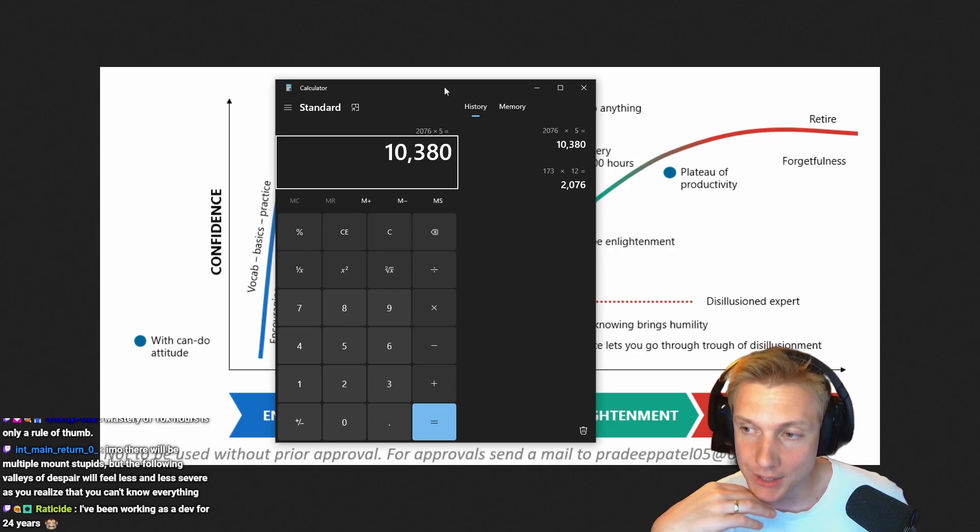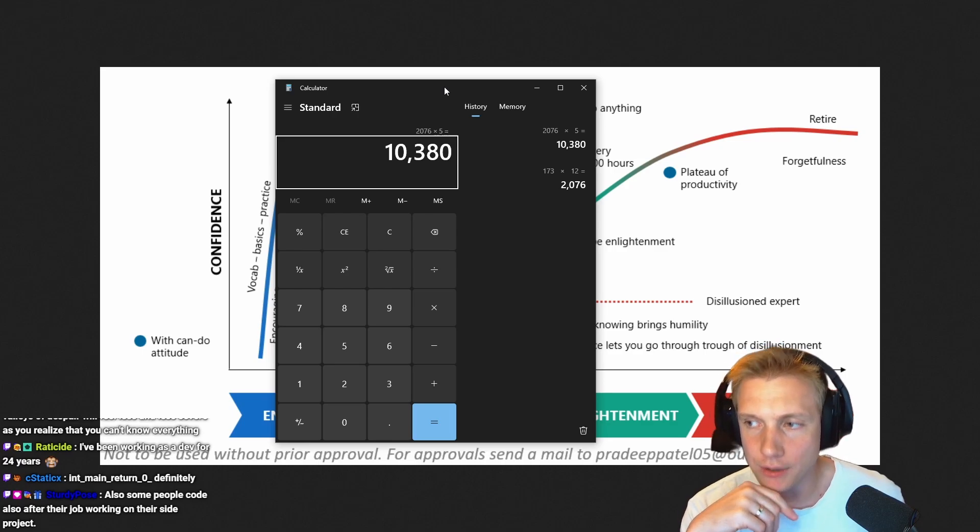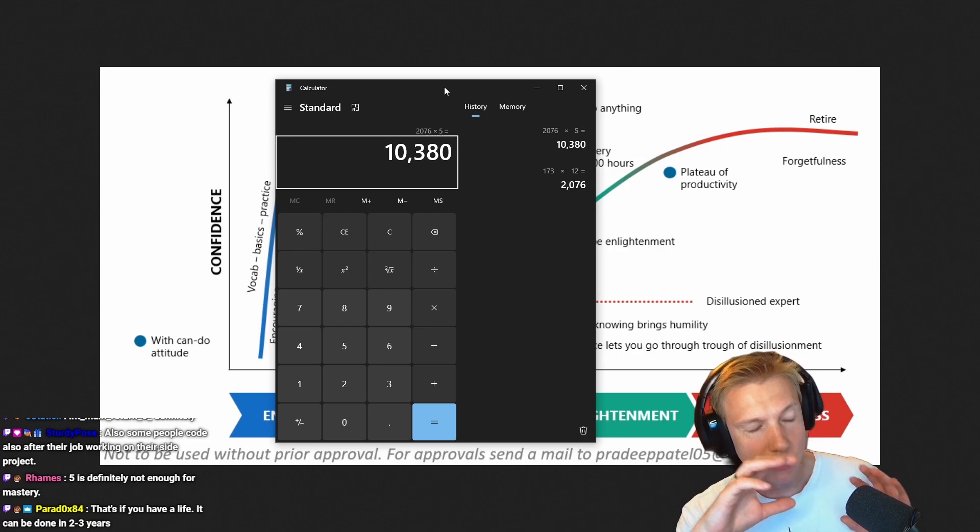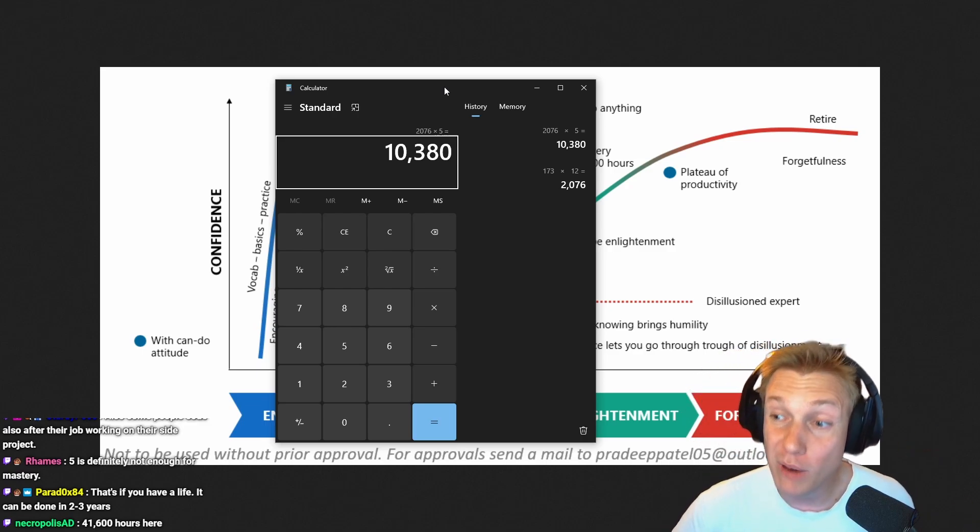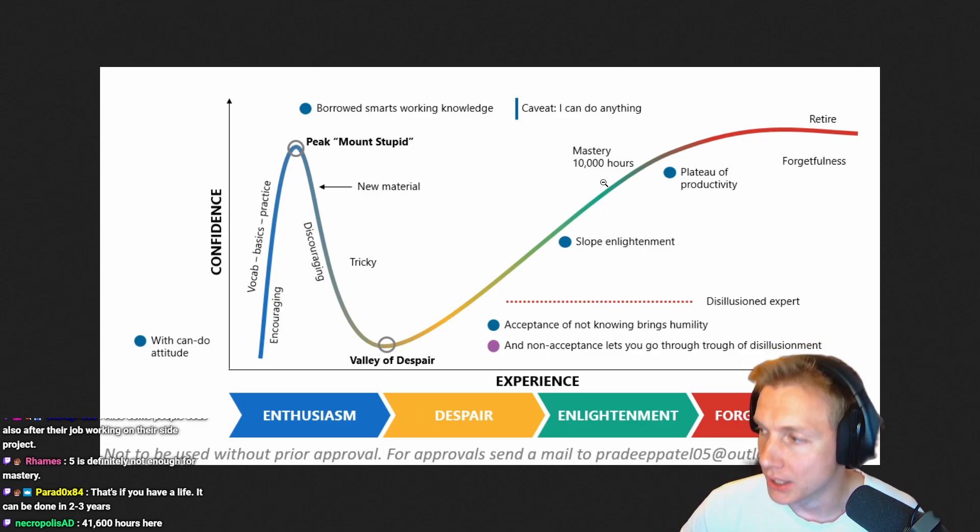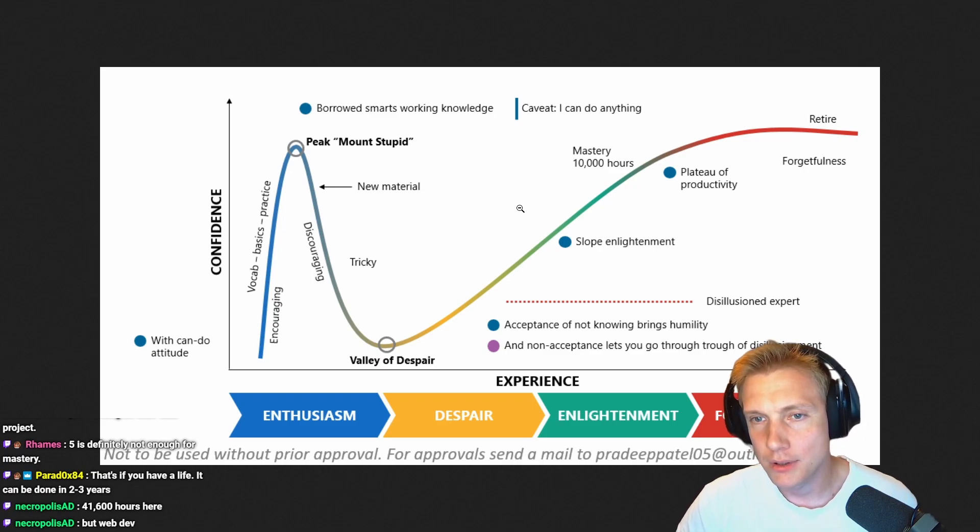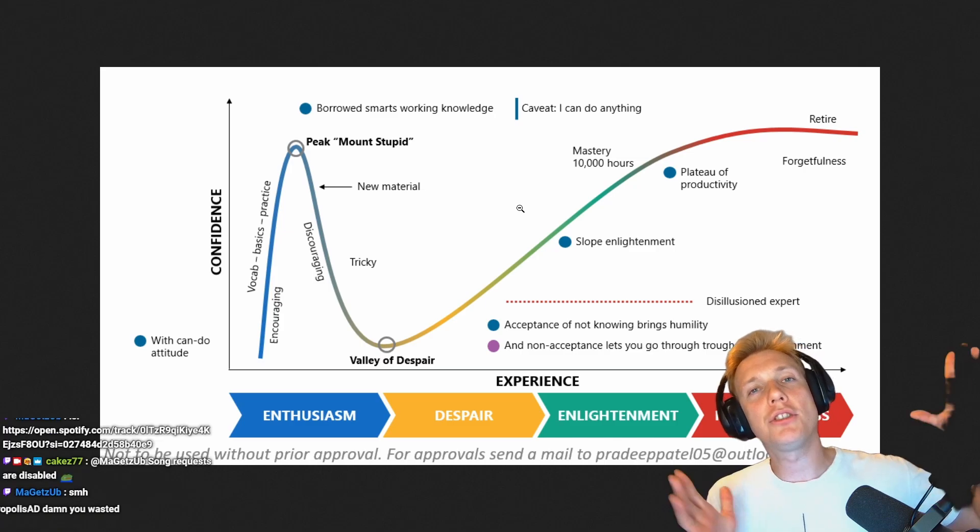There will be multiple Mount Stupids, but the following Valleys of Despair will feel less and less severe, as you realize you can't know everything. Yes. Main Return Zero. That's true. You realize that you are going to focus on this one particular thing, and you have to let other things be done somewhere else. 41,000 hours here. Wait. You have that many hours in what? Coding? Or making music? What are you talking about? You are light years away from the plateau of productivity. Wrong. You're so wrong. It's insane.